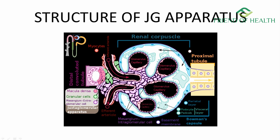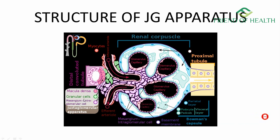This area is near our distal convoluted tubule. Near the distal convoluted tubule, we have our macula densa cells, our juxtaglomerular cells, and our mesangium — also called extraglomerular cells. So macula densa, granular cells, and mesangium — these three together are known as the juxtaglomerular apparatus, and renin is secreted from it.